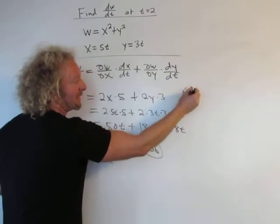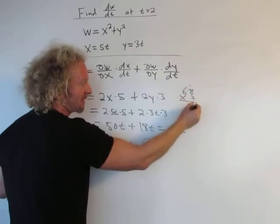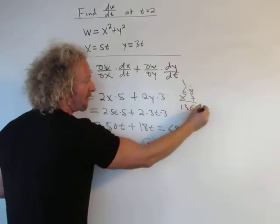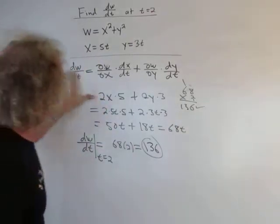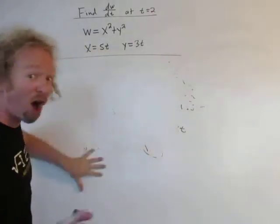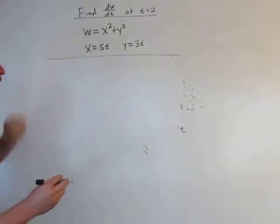You can check that using the old school method. 68 times 2. 2 times 8 is 16, carry the 1. Yep. Looks okay. So that's one way to do it. The other way to do it, let me just erase all this stuff. The other way to do it is just plug everything in. Watch this. This is a joke, I think.